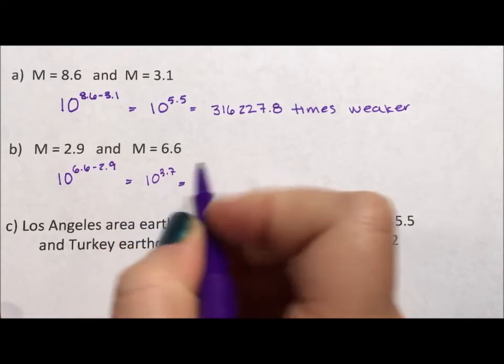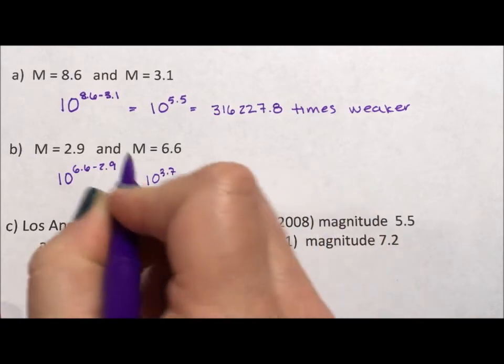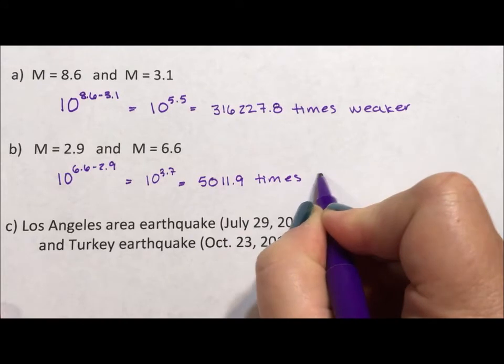And when we throw this into the calculator, we get 5,011.9. And since we're comparing the bigger to the smaller, this time I say times stronger.